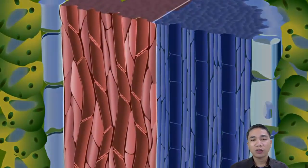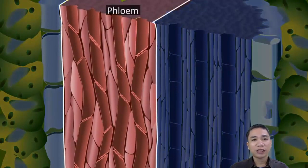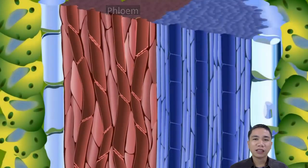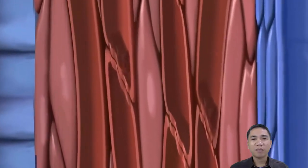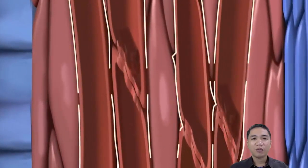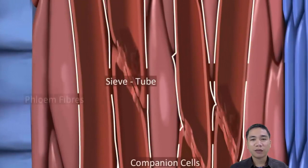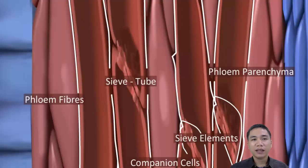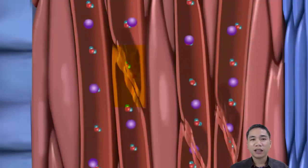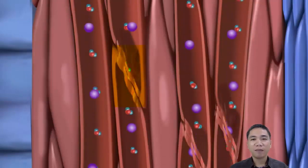Phloem tissue, which conducts solutes — mostly sugars produced via photosynthesis — is composed mostly of two types of cells. The relatively large, more or less cylindrical sieve tube members have narrower, more tapered companion cells closely associated with them. Sieve tube members, like vessel elements, are laid end to end, forming sieve tubes. However, the end walls have no large openings; instead, they are full of small pores through which the cytoplasm extends from cell to cell. These porous regions are called sieve plates.